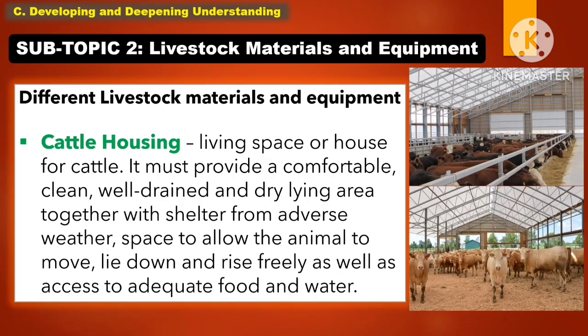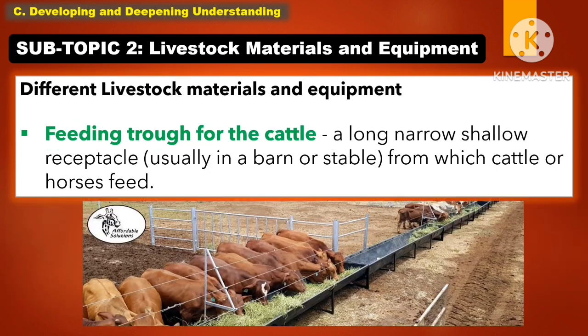The following are the different livestock materials and equipment. The first one is the cattle housing. It is a living space or house for cattle. It must provide a comfortable, clean, well-drained and dried lying area, together with shelter from adverse weather, space to allow the animals to move, lay down and rise freely, as well as access to adequate food and water.